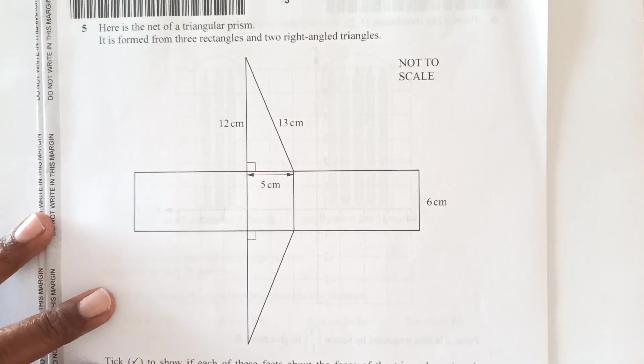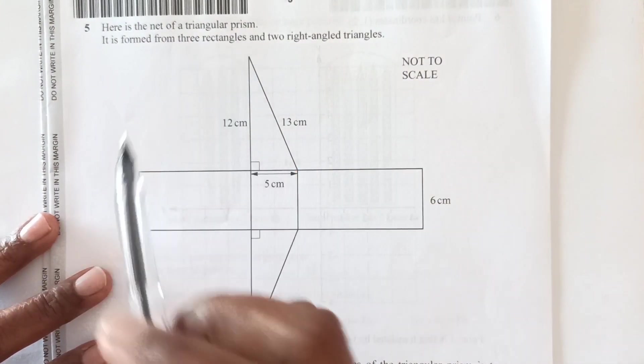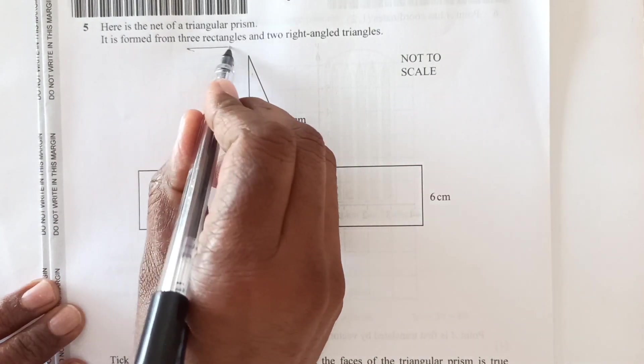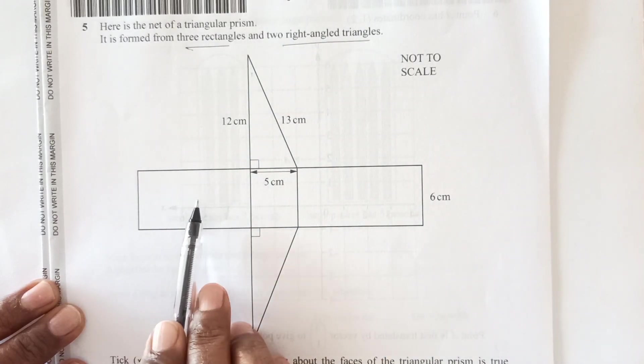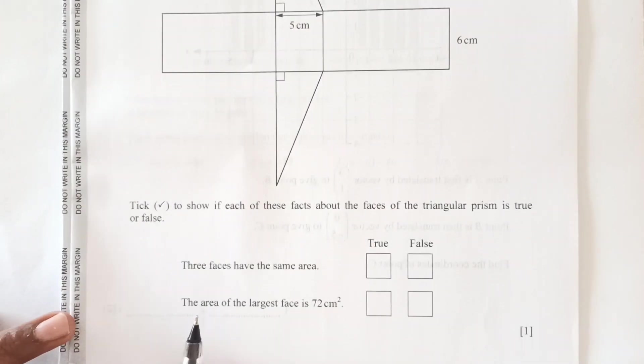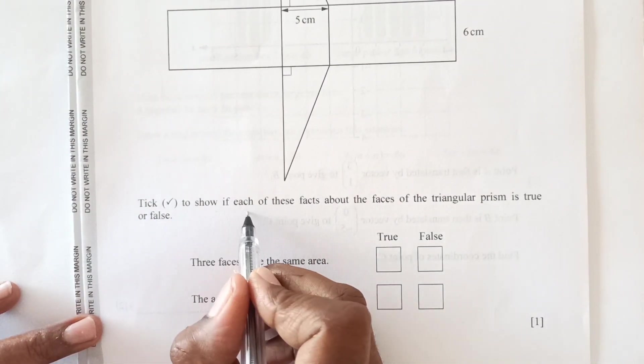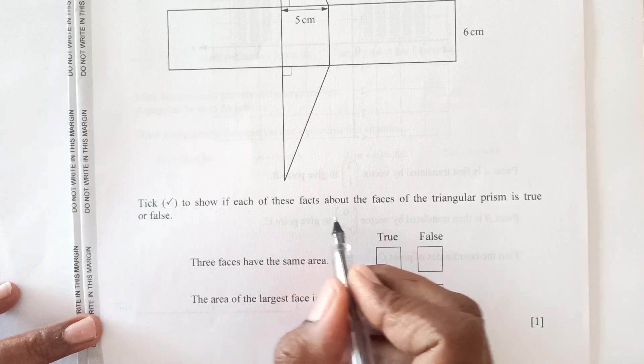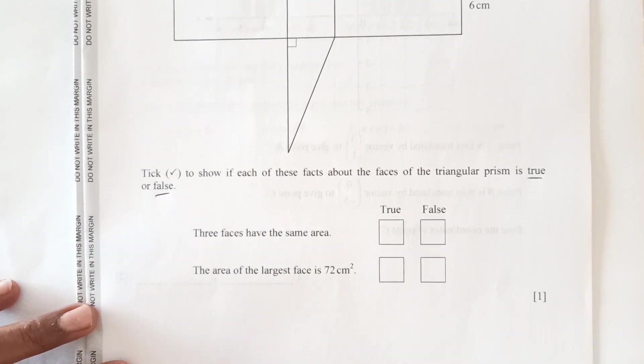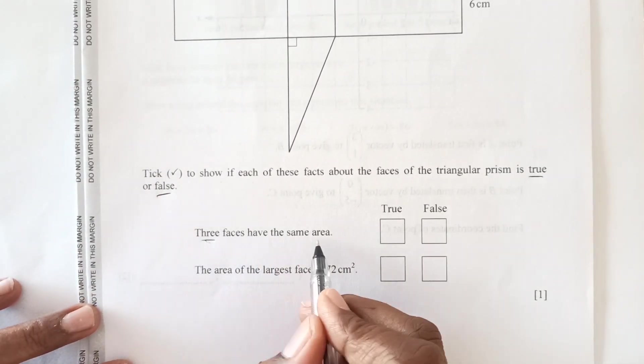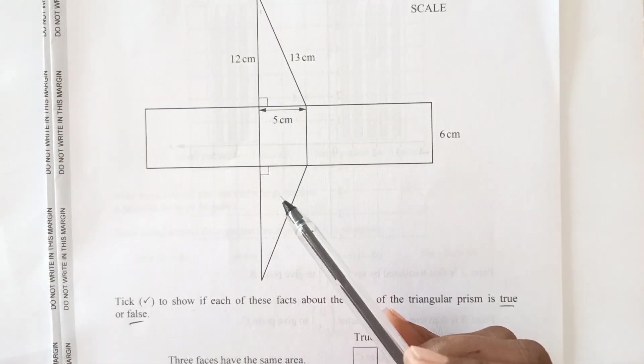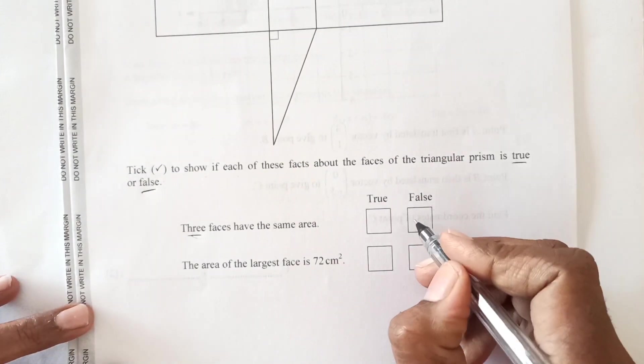Now number 5, here is the net of a triangular prism. This is the base which is triangle. It is formed from three rectangles and two right angle triangles. Three rectangles: one is here, two and three. There are two right angle triangles. The question is tick to show if these facts about faces of triangle prism is true or false. Let's see what is given to us. Three faces have same area. There are only two faces which are same. So it is false.